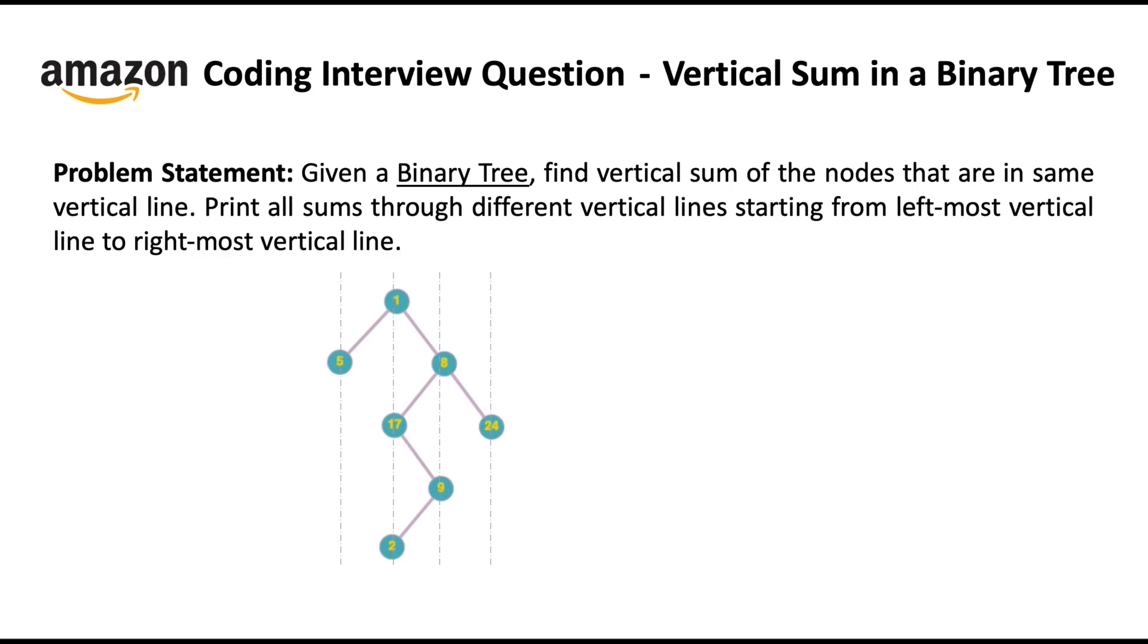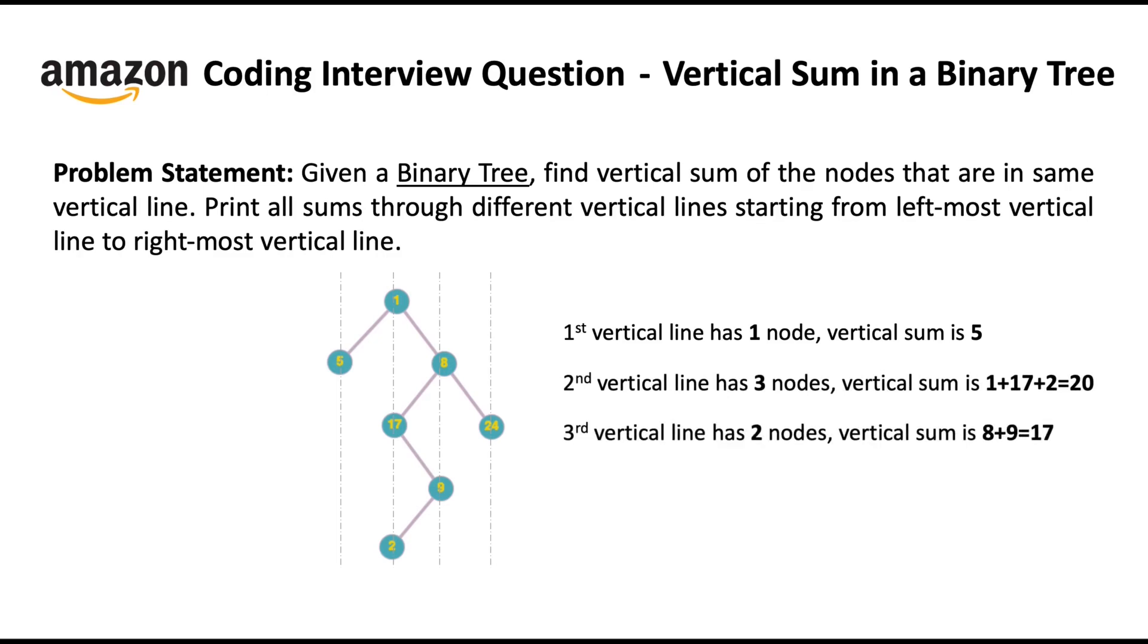So, the vertical sum of the first vertical line is 5 itself as it has a single node. The vertical sum of the second vertical line is 1 plus 17 plus 2 equals to 20. The vertical sum of the third vertical line is 8 plus 9 equal to 17. And the vertical sum of the fourth vertical line is 24 itself. So the expected output or answer is 5, 20, 17 and 24. I hope the problem statement is clear to you. And you understood what exactly is the ask here.